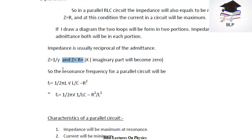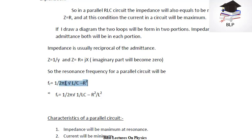The resonance frequency for this parallel rejector circuit will be: resonance frequency equals one over two pi times the square root of (L over C minus R squared over L squared). So R goes inside and this becomes 1 over LC minus R squared over L squared.